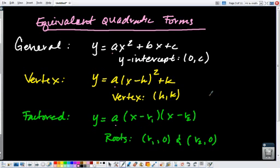What these forms give us are different pieces of information. For instance, the general form, we can look at c and know what the y-intercept is. And by definition, the y-intercept occurs when x is 0. So if I put 0 in for x, you can see c is the only thing that's left.